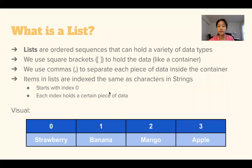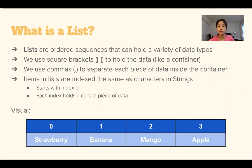Well, we have this thing called lists. And what is a list? Lists are ordered sequences that can hold a variety of data types. We use square brackets to hold the data, which is kind of like the container, and then we use commas to separate each piece of data that is inside the container.